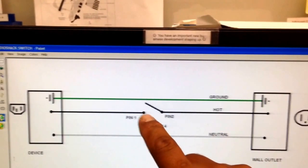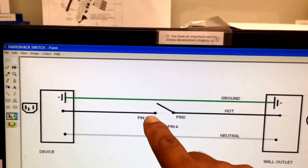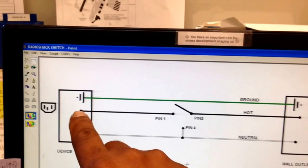And from pin one, that's where the power comes back out from the wall to the switch, boom, connects to pin one, goes to your device.